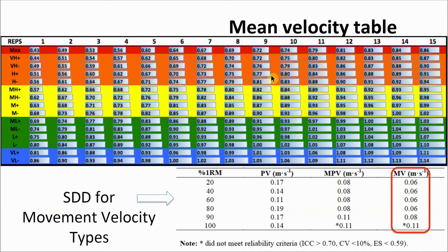Here we have an example of a mean velocity table. You then use their baseline velocity from the individualised load-velocity profile and adjust their training loads for that particular session if their velocities are higher or lower than their target velocity, according to the smallest detectable difference.